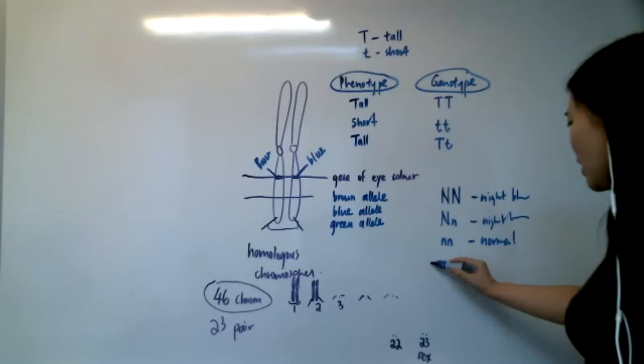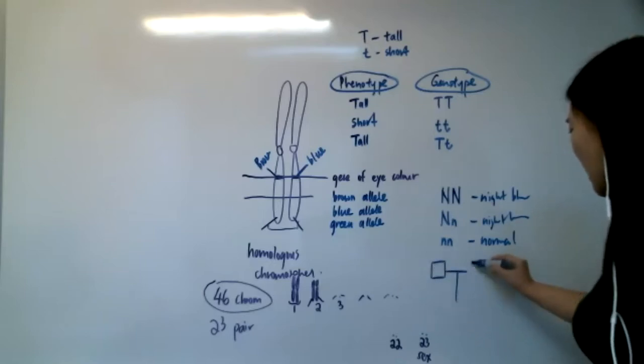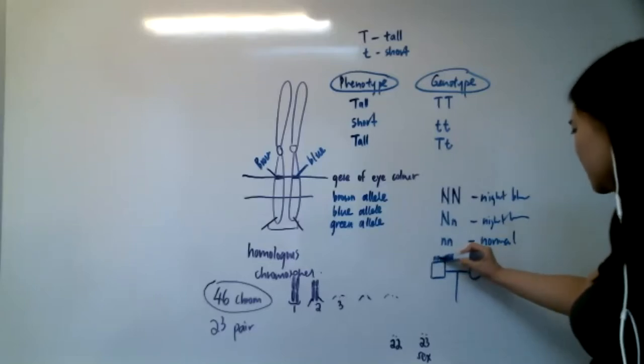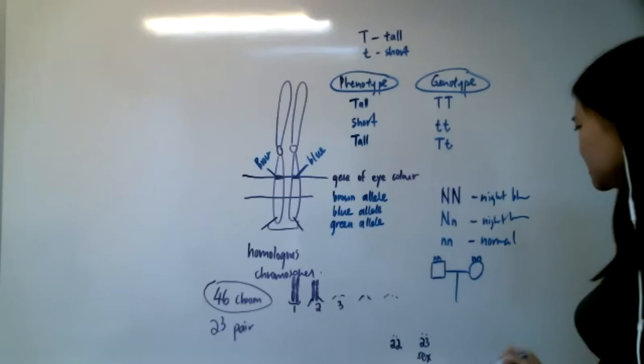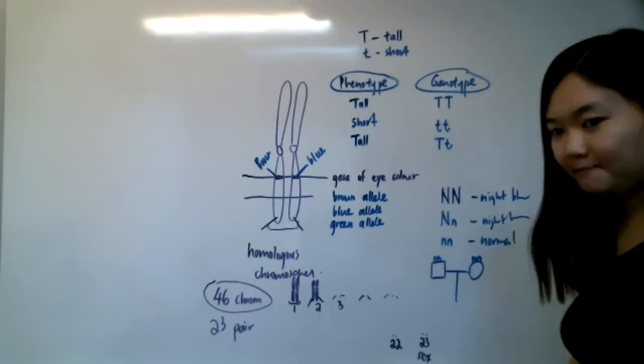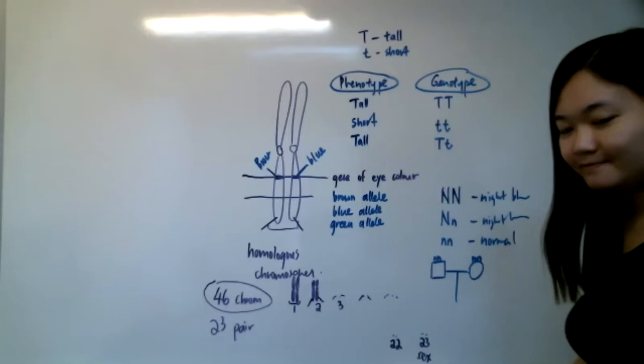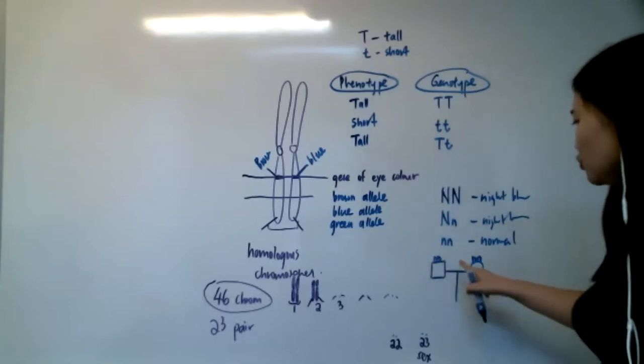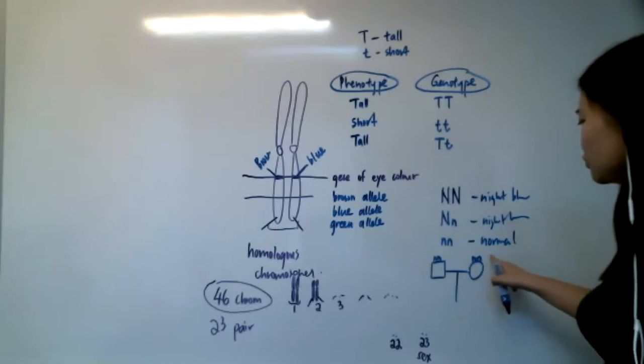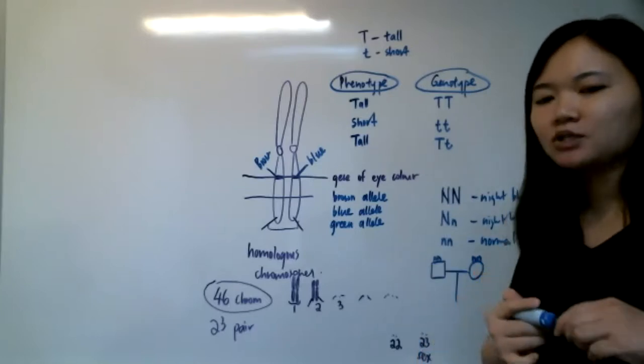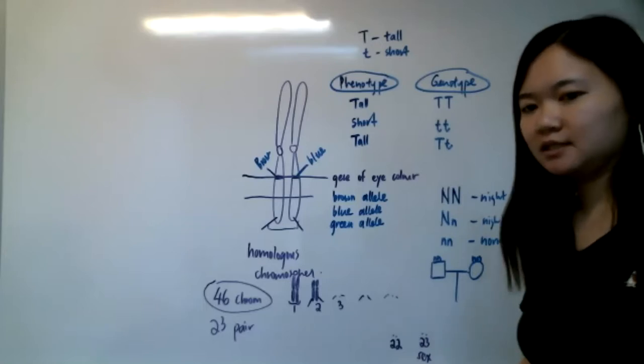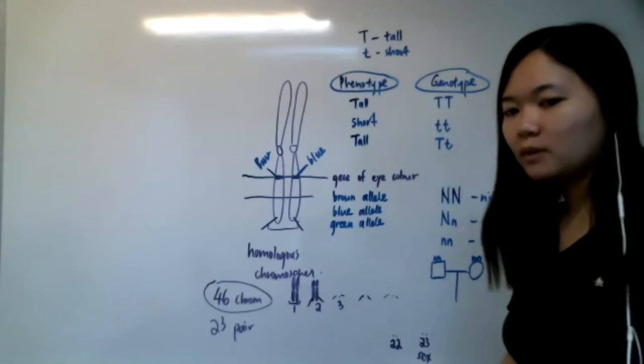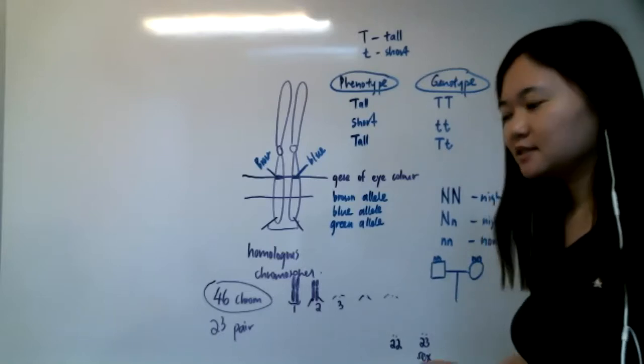Individual 12's parents are both normal. That means they are both nn. So what could be her phenotype? Normal. Yes, because the father has two normal alleles, the mother has two normal alleles. They can only pass on normal alleles to the kids. That is individual 12. So individual 12 will be normal.